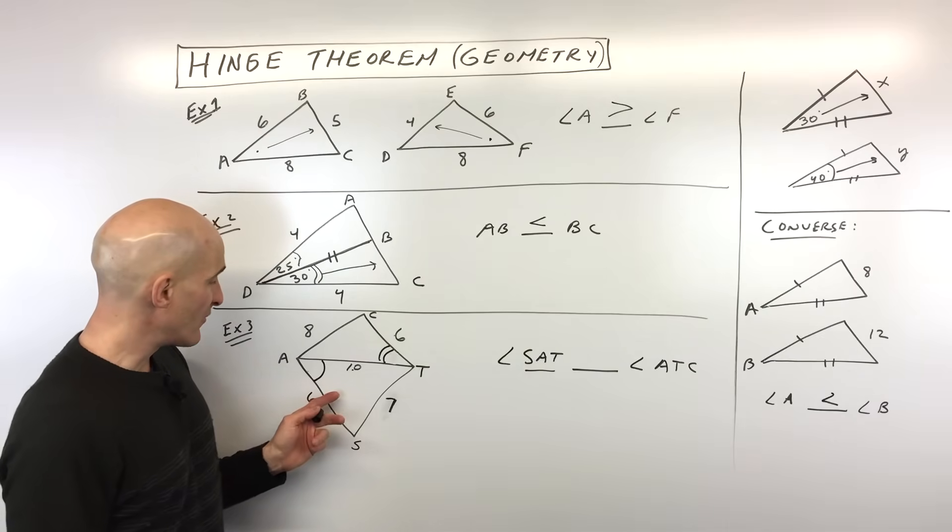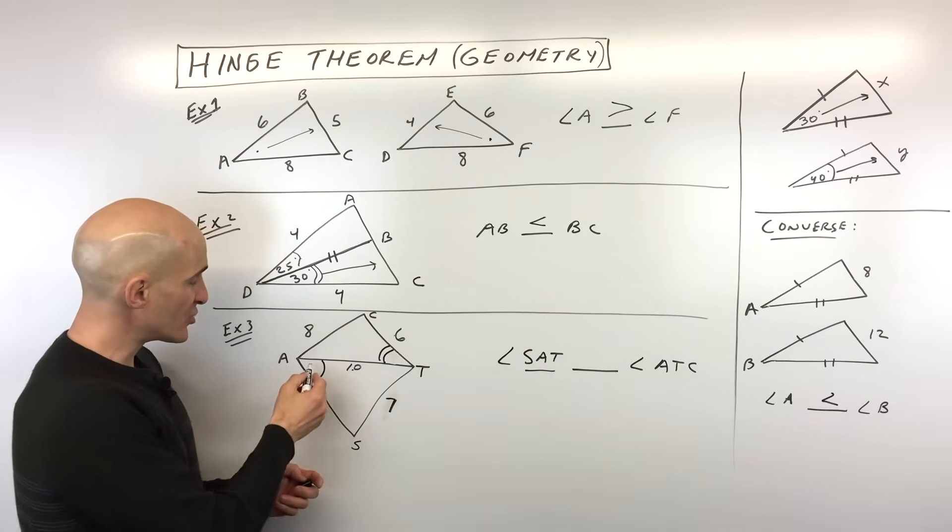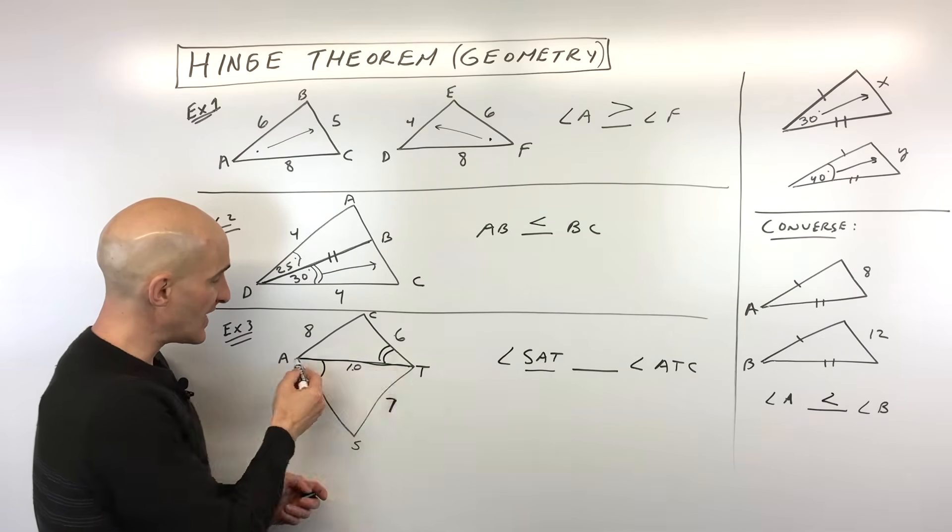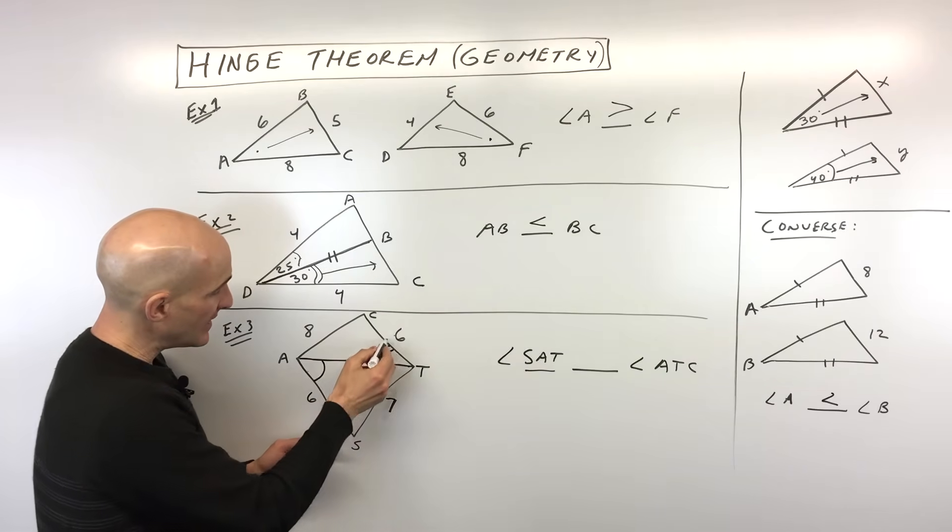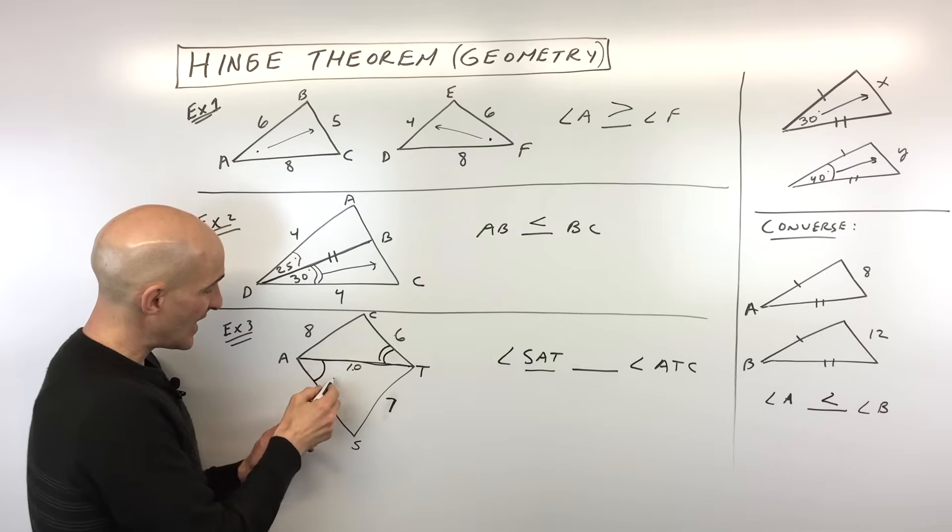Example three, you can see that we've got two triangles, and you can see that they're sharing this side right here, this side AT. It's 10 units long. But notice that you've got 10 and 6, and you've got 10 and 6.